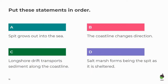Put these statements into the correct order. Pause the video so you've got enough time to do this. Let's see how you got on. Did you get C first? Longshore drift transports sediment along the coastline; the coastline changes direction; the spit grows out into the sea; and that salt marsh is going to form behind the spit as it is sheltered. So hopefully you've got jotted down C, B, A, D.